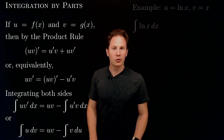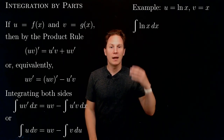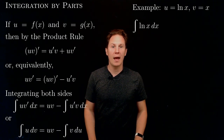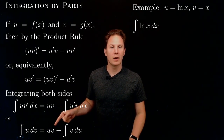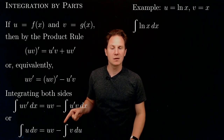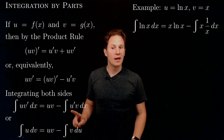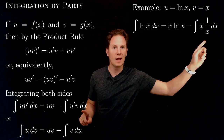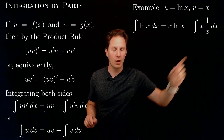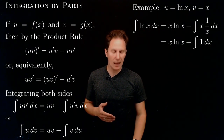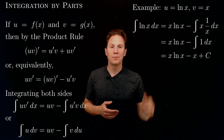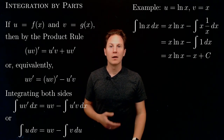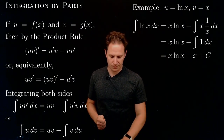This method is called integration by parts. In this example, we have u equals ln(x) and v equals x, giving us the integral of ln(x) dx. On the right-hand side we have x·ln(x) minus the integral of x times the derivative of ln(x), which is 1/x. That simplifies to x·ln(x) minus the integral of 1 dx, which is x, plus constant c. So the integral of ln(x) dx equals x·ln(x) minus x plus c.